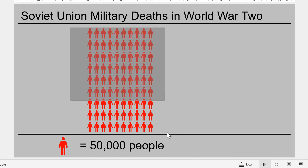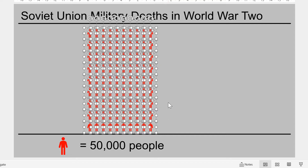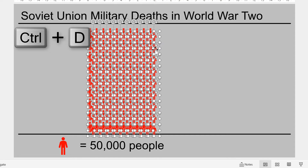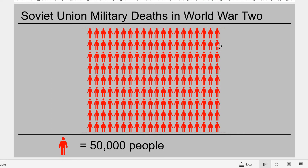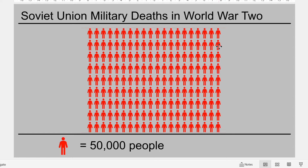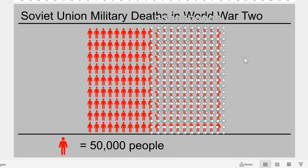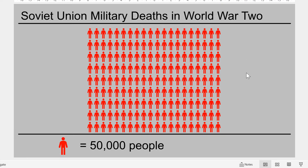Then I'll click and drag to select all of these and press Ctrl D again, then drag these to the side and use the guidelines to line them up. Now I have 9 million people, but I actually want to have 8.7 million, so I'm going to delete some people at the top — that's 100,000, 200,000, 300,000. And now I have the correct number of people.